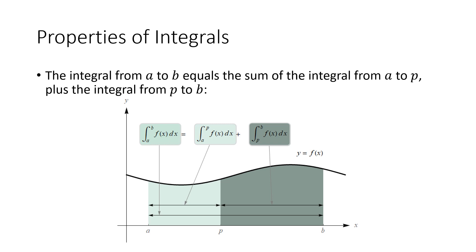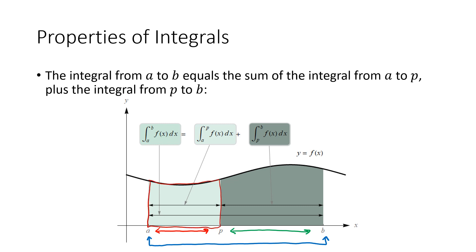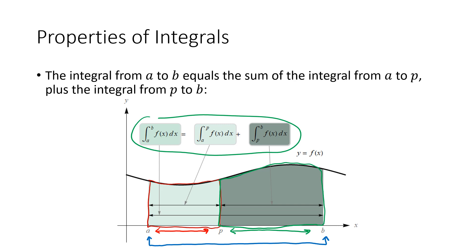One property of integrals is that if you have an interval from a to b split up into two pieces — the interval from a to some point in the middle, let's call that p, and the interval from p to b — then the area from a to p added to the area from p to b gives the entire area. Symbolically: the integral from a to b of f of x equals the integral from a to p plus the integral from p to b.